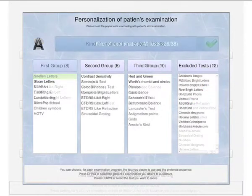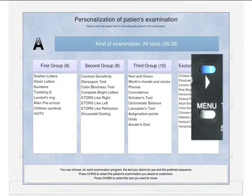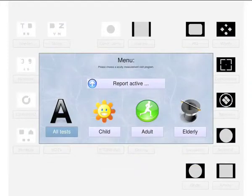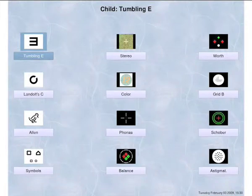After having personalized the medical examinations of the patients according to your preferences, press the menu key in order to start the examinations according to the patients to test. The kind of visit appears on the top side of the page, near the selected test.